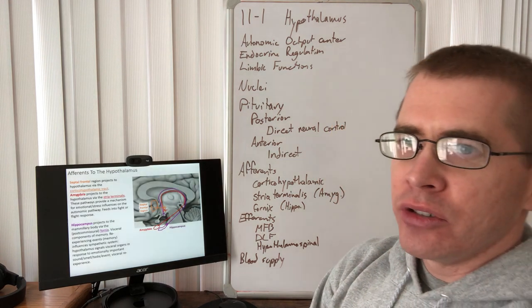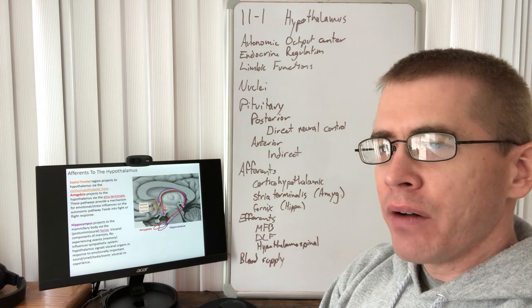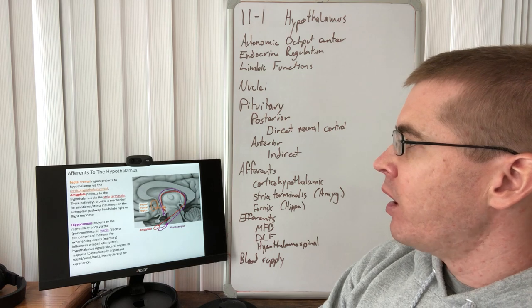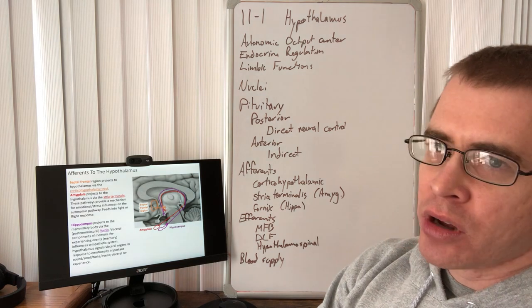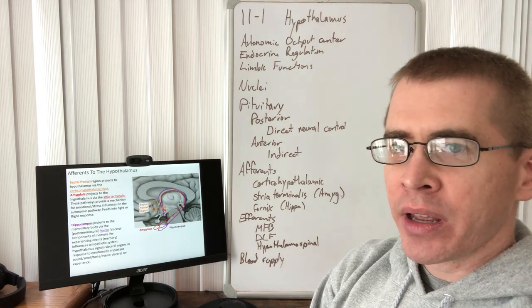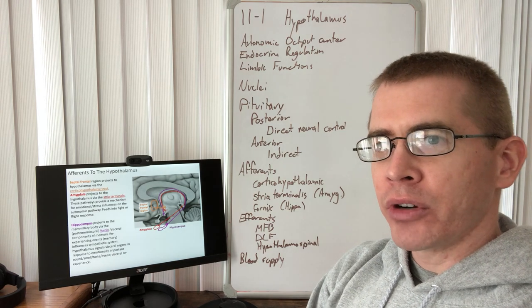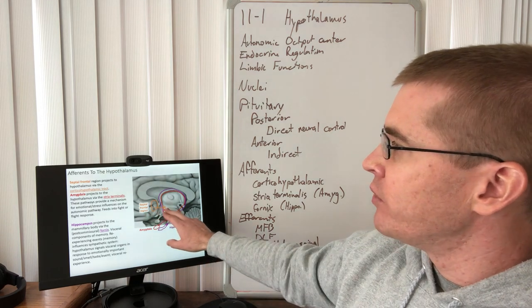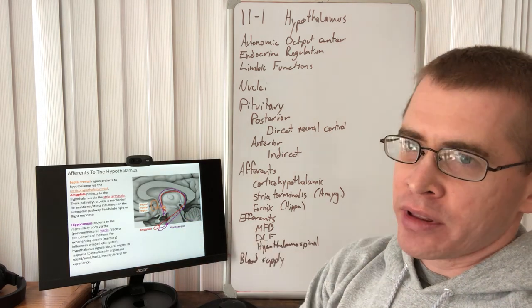Now let's talk about the neural connections of the hypothalamus. The things that are inputting on the hypothalamus. First, we have the corticohypothalamic tracts from the septal limbic area of the prefrontal cortex. So those project back via the corticohypothalamic tract.